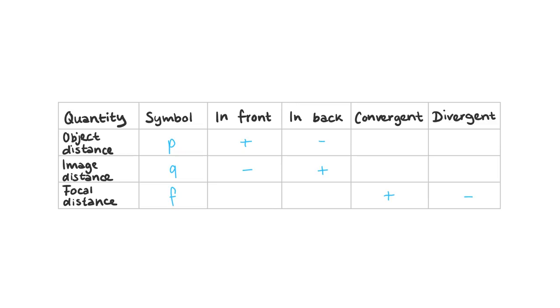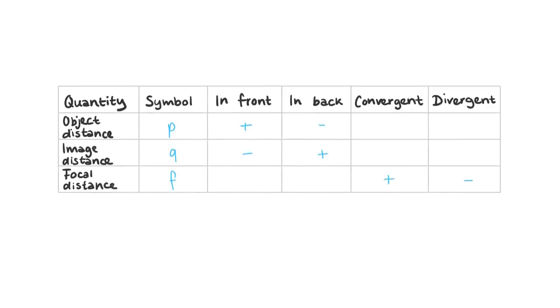For example, if the image distance q is negative, this means that the image is in front of the lens, which means it's on the left side of the lens. This means that the image is virtual.